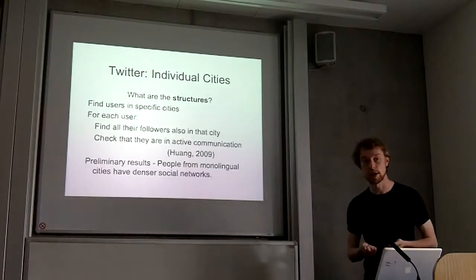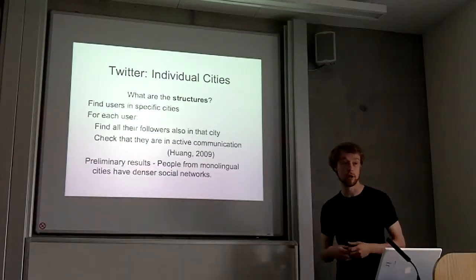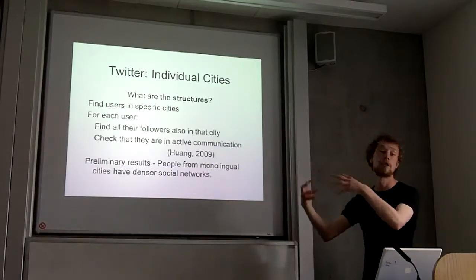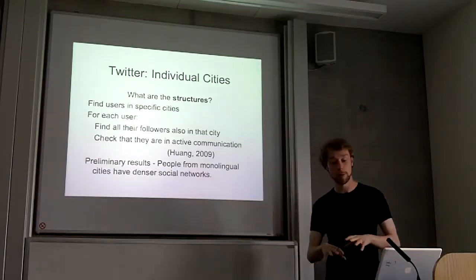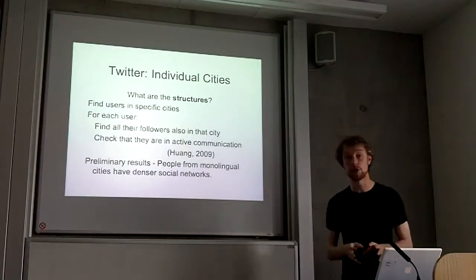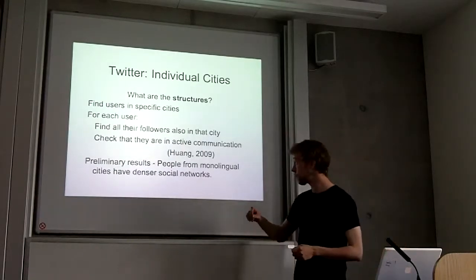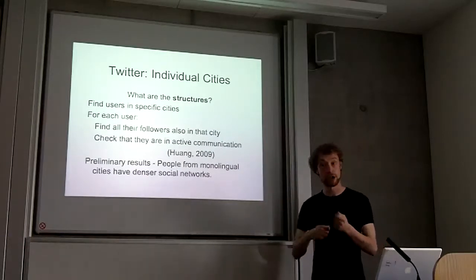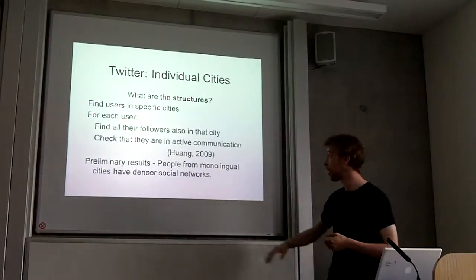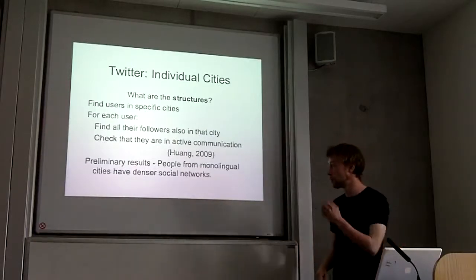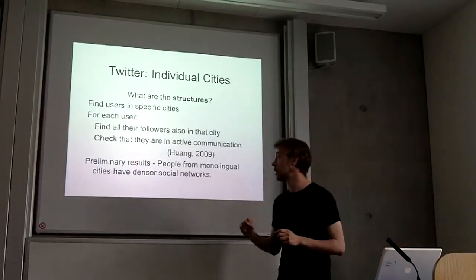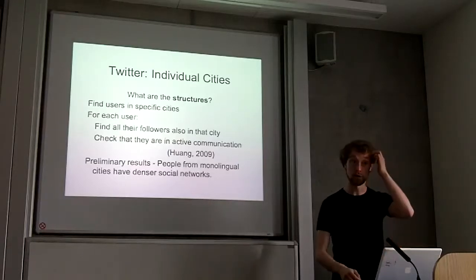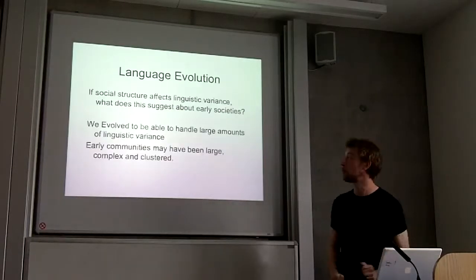However, it doesn't give us the whole picture because it doesn't show us the structure of the network. I might know how many friends I have, but I don't know how they're talking to each other. So what I'm working on at the moment is building social structures for individual cities and checking that people who say they're friends are actually in active communication, following a paper on how to construct social networks from Twitter. Preliminary results suggest that people from monolingual cities do have denser social networks, but I'm still working on that.